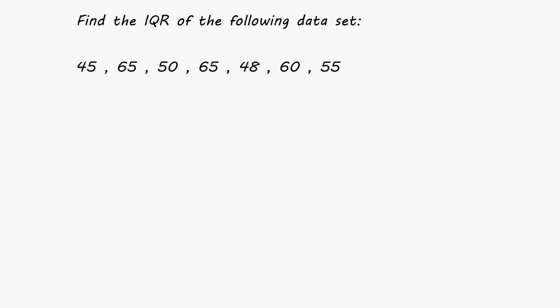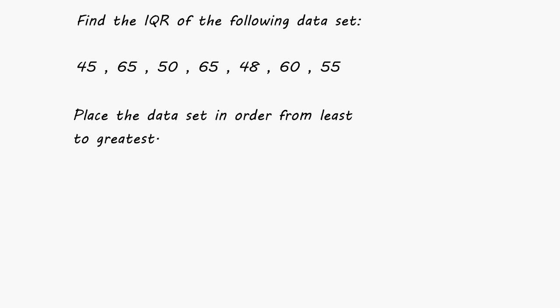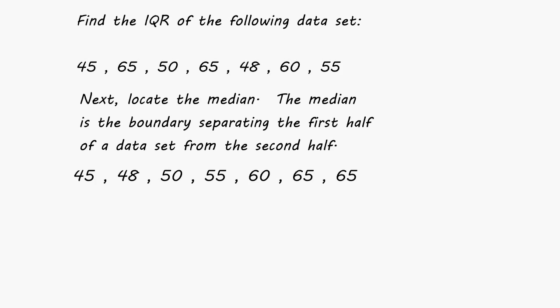Let's examine how to find the IQR by using the following data set. The first thing you have to do with any given data set is place it in order from least to greatest. After placing your numbers in order, you have to locate the median. The median is the boundary separating the first half of a data set from the second half. With the data set we have here, we can see that 55 is the middle value — therefore, that is our median.